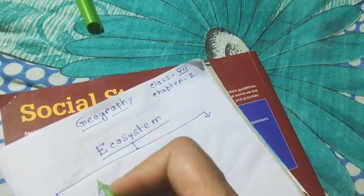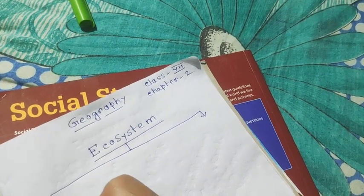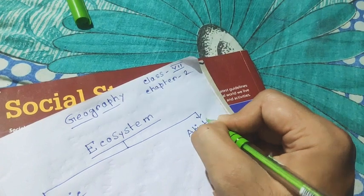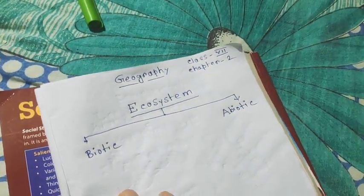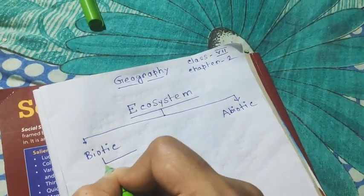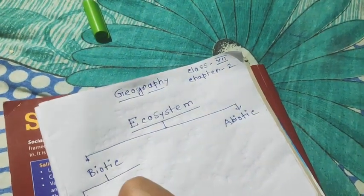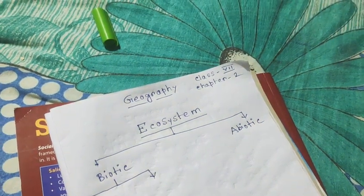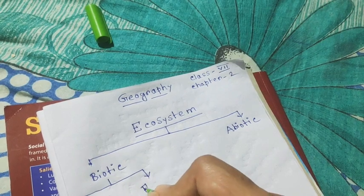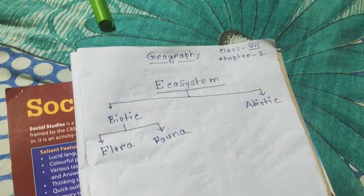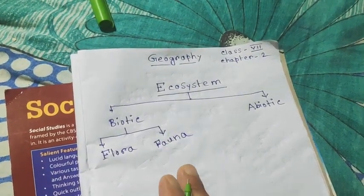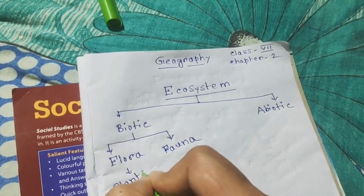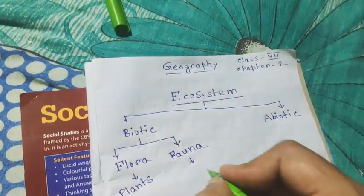The two components of an ecosystem are biotic and abiotic. Within biotic components, there are flora and fauna. Flora means plants and fauna means animals.